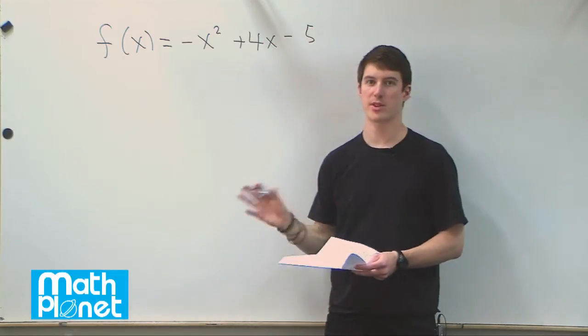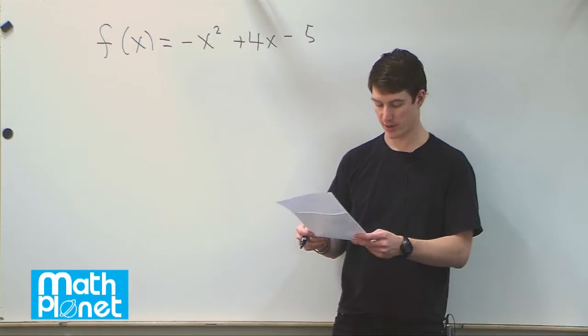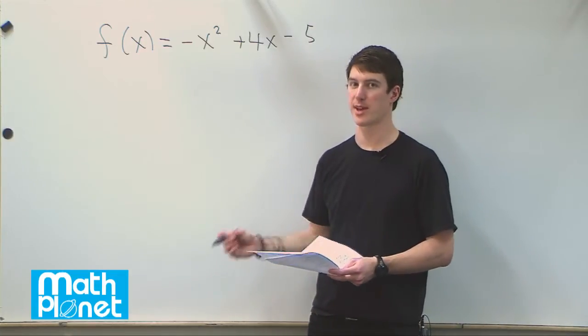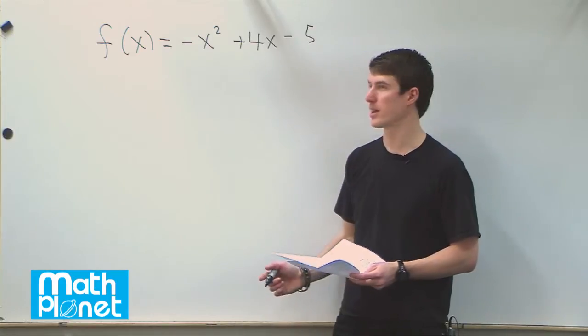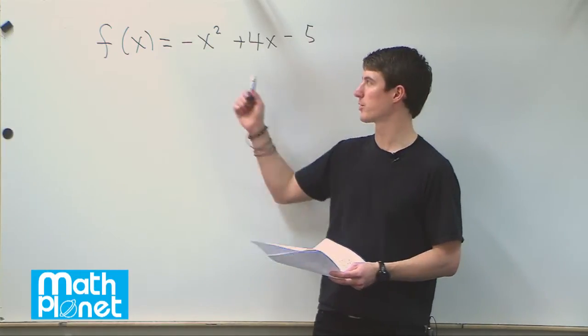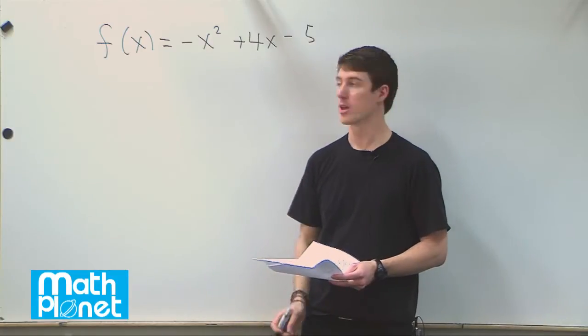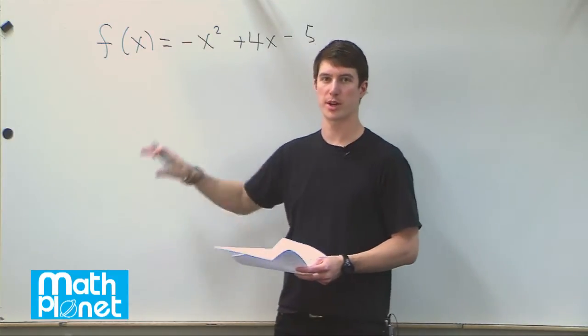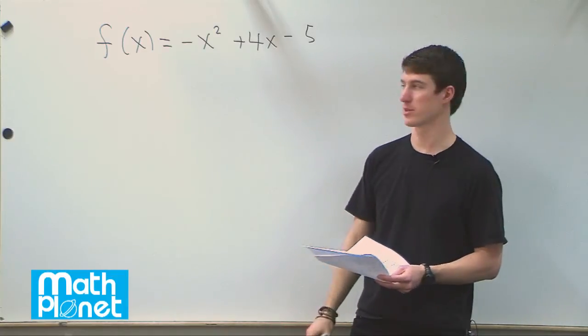Now we're given one zero of this function. One zero is in the complex plane 2 plus i. We want to see if the conjugate of that zero, 2 minus i, is also a zero for this in the complex plane. So we'll simply evaluate this twice, one for each conjugate, and see if they both give us zeros.